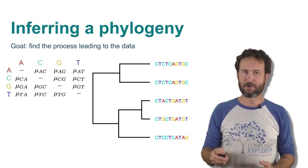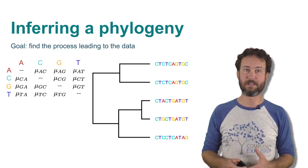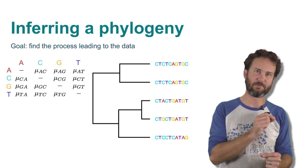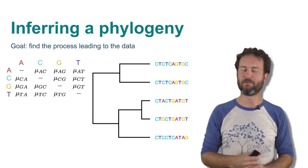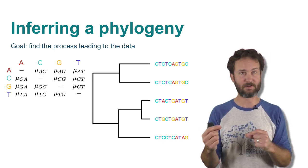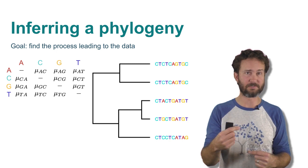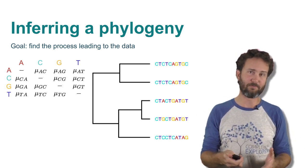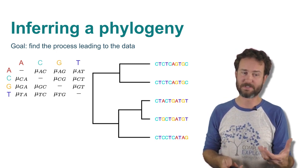This process also involves mutation — most importantly, it involves mutation — because the changes in DNA are what allow us to infer the past. So we have typically a rate matrix, a matrix of transition rates between different base pairs. When one base pair goes to another, that's a mutation. So A to C, A to G, A to T — all of these can have different rates, or they can have the same rates, depending on the model we're using.